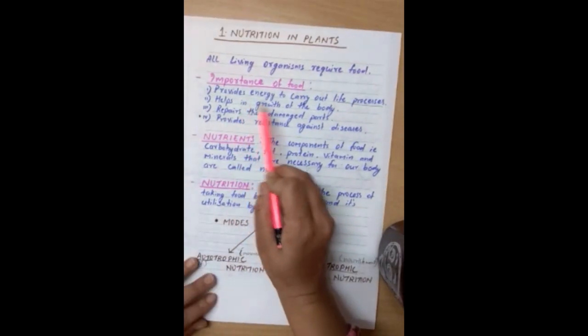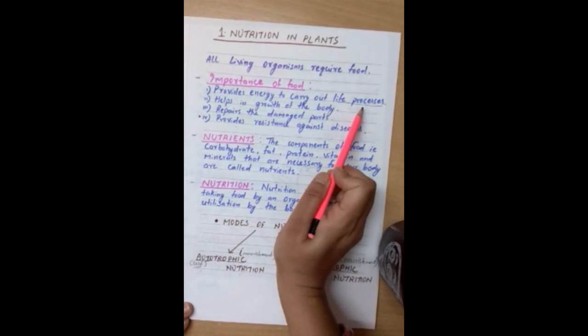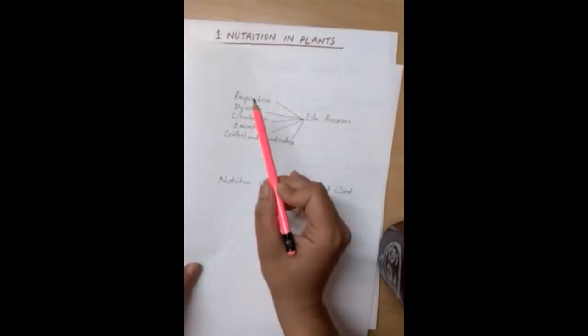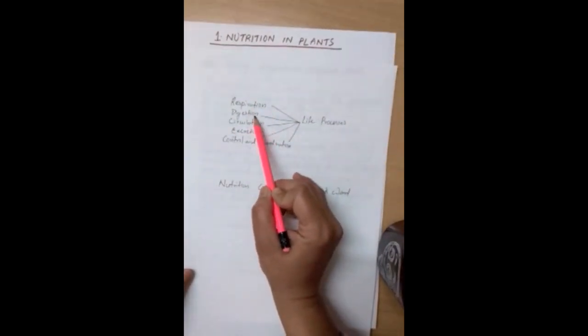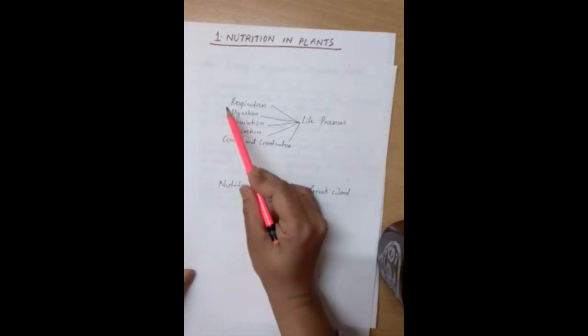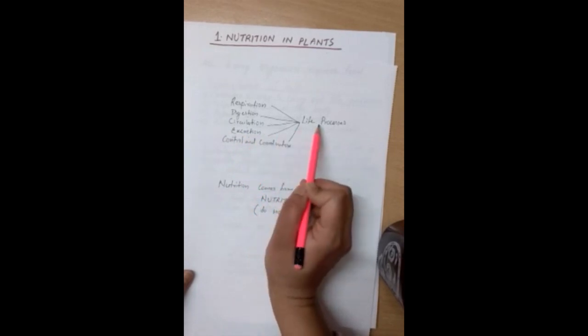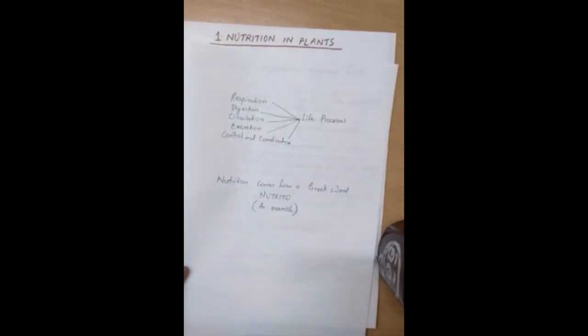Food provides energy to carry out life processes. What do you mean by the term life processes? Life processes stands for respiration, digestion, circulation, excretion, control and coordination. All these processes are essential for our survival. That's why they are called life processes.